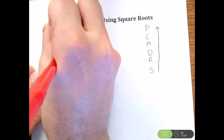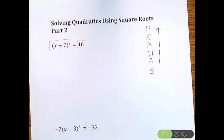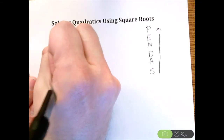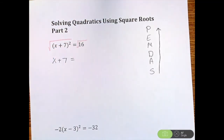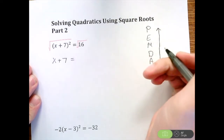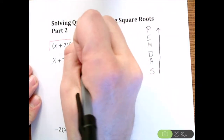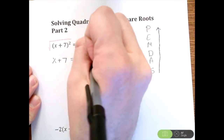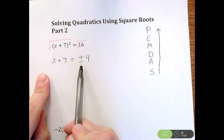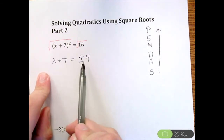To get rid of the square, we're going to square root both sides. On the left side, the square and the square root are inverse operations, so those cancel, leaving x plus seven. On the right side, the square root of 16 gives us plus or minus four. So we have x + 7 = ±4 — we actually have two problems here.